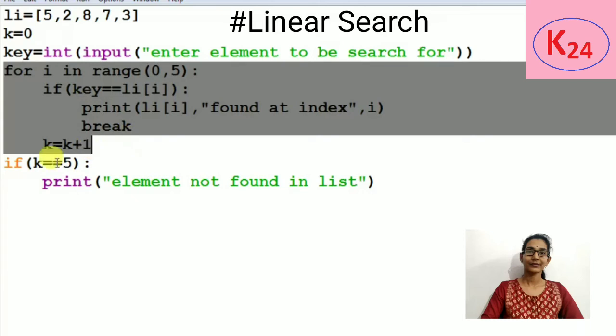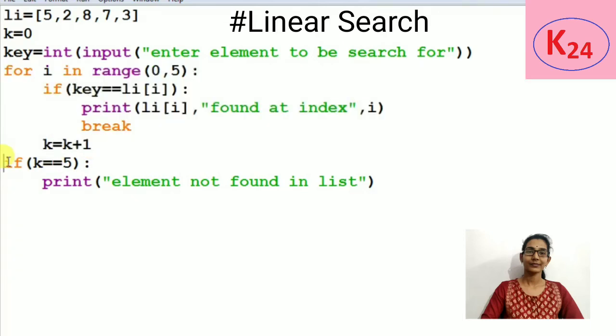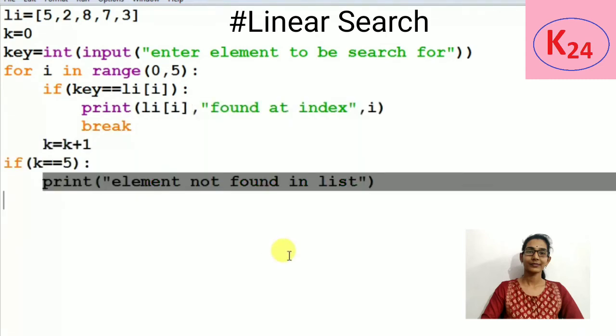If we cannot get the search element in the range, meaning till 4, then it will exit from the for loop and check if k equals 5, and print that element is not found in list. So this is the program.